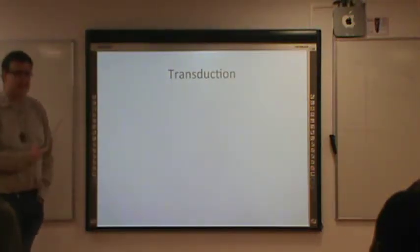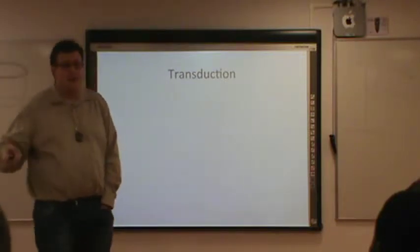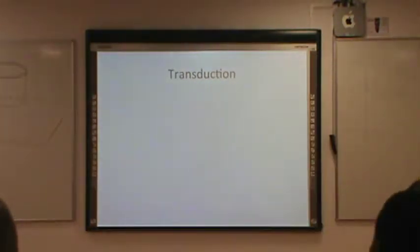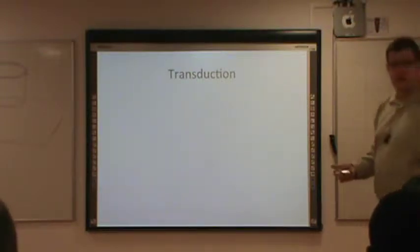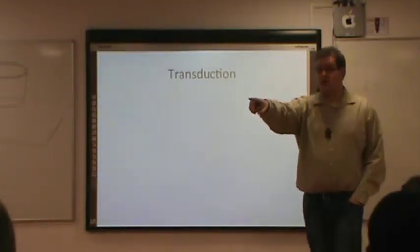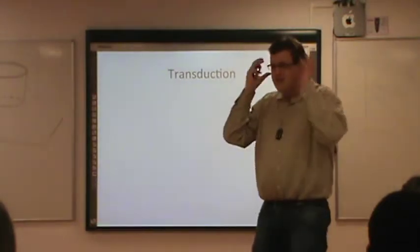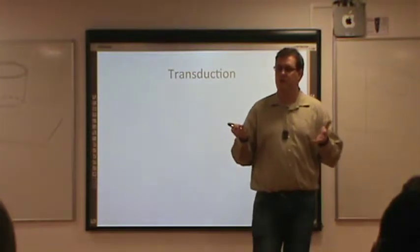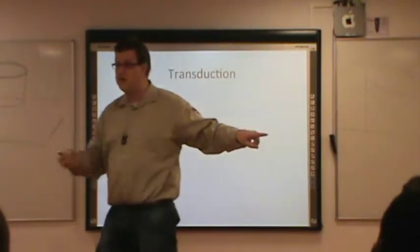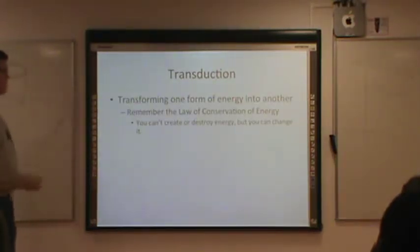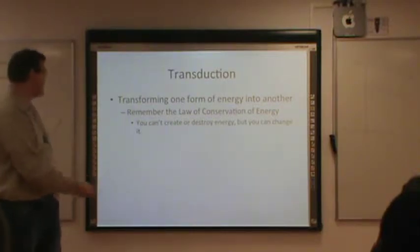Transduction — what is this? When something transduces something else, it transforms it. So transduction has to do with transformation. When we're talking about vision, what type of transformation? Energy. We have light energy, which is electromagnetic radiation, but our brain doesn't work on electromagnetic energy. It works on neural signals, which are electrochemical. So transduction is transforming one form of energy into something else.